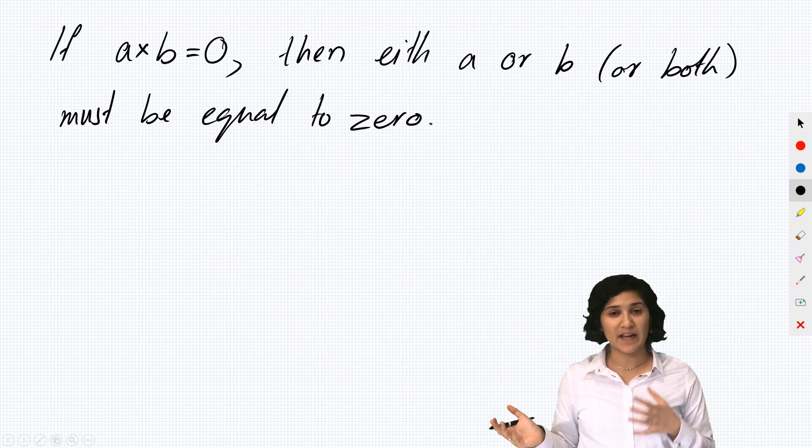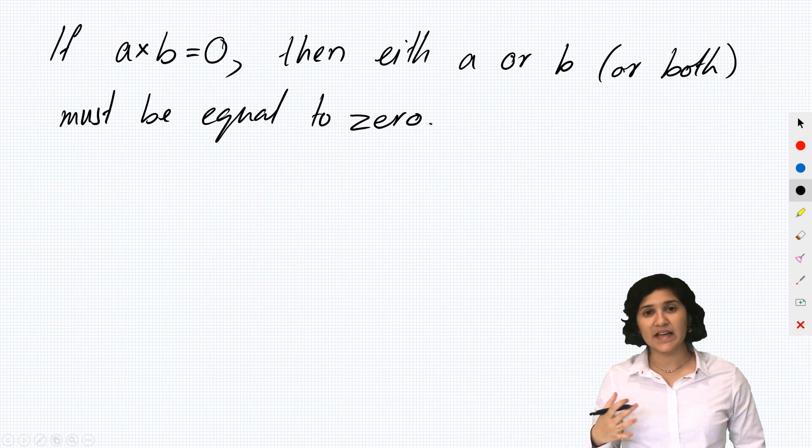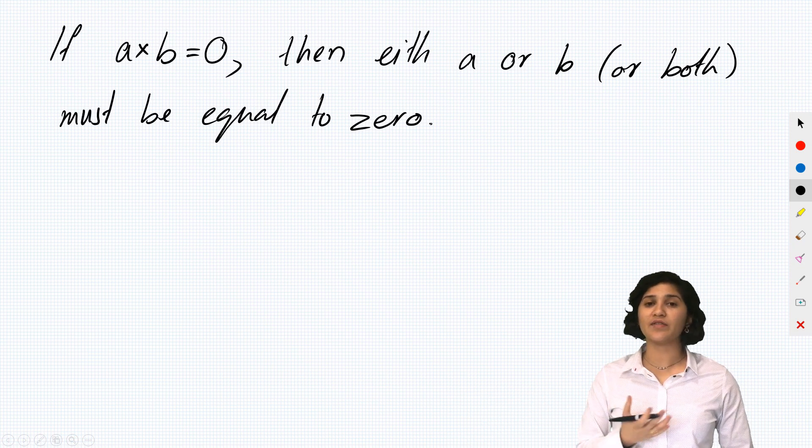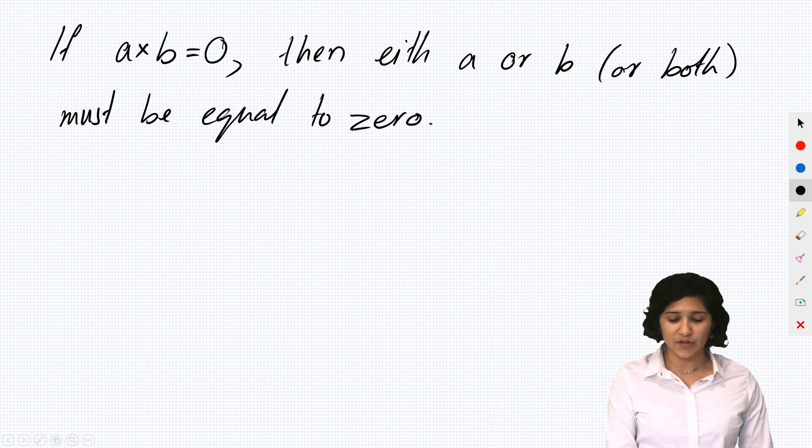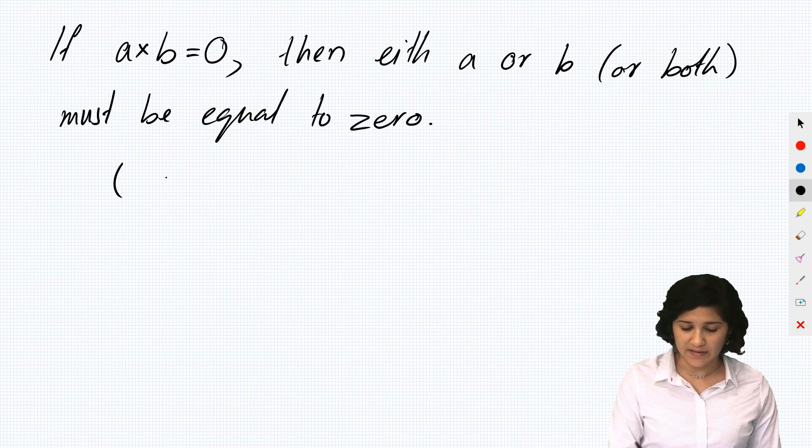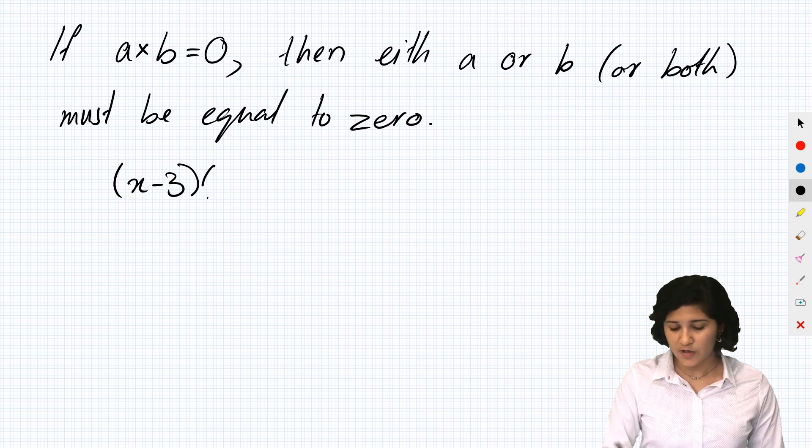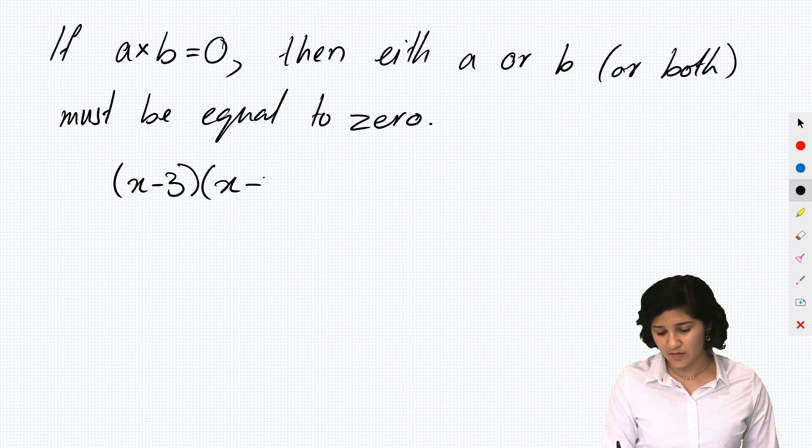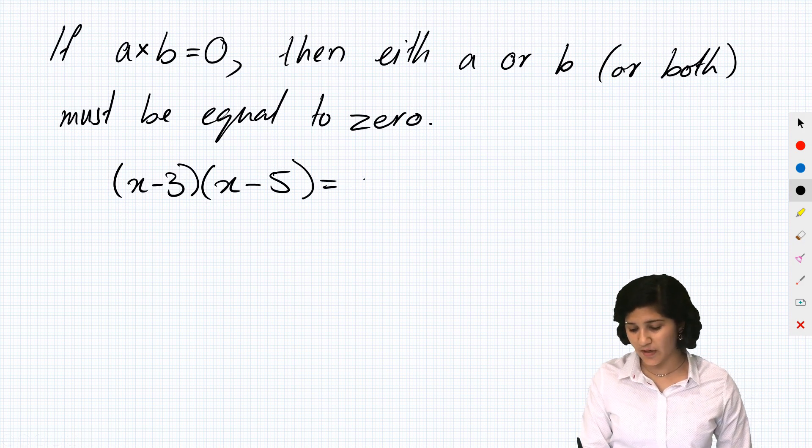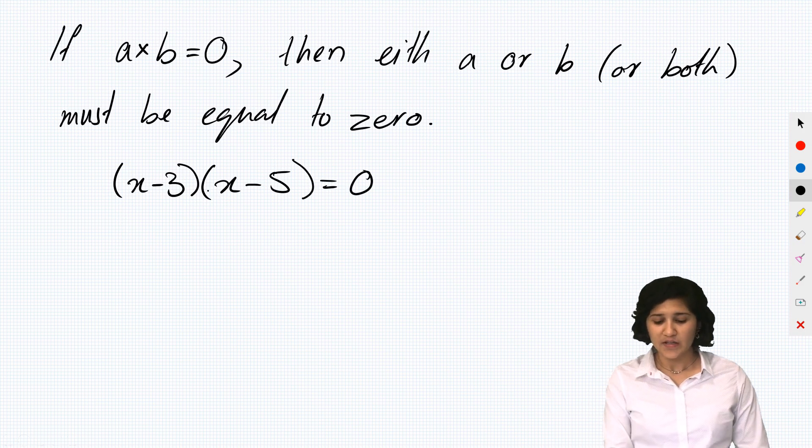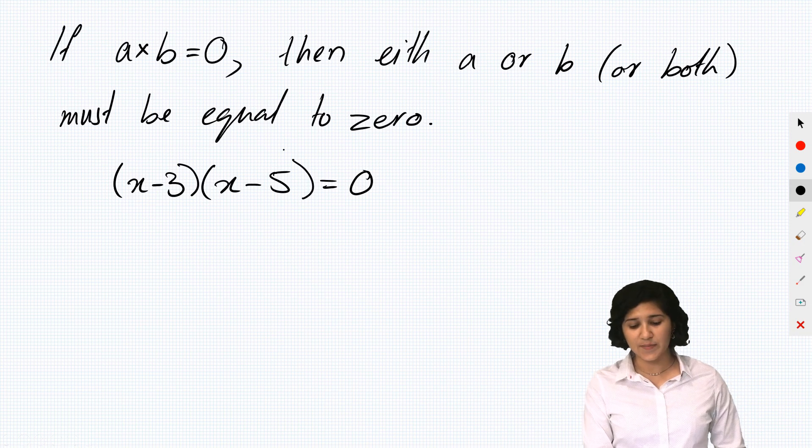So why that's important in quadratics is that it gives us a useful way of solving quadratics. Let's say I have something like this—x minus 3 times x minus 5 equals zero.